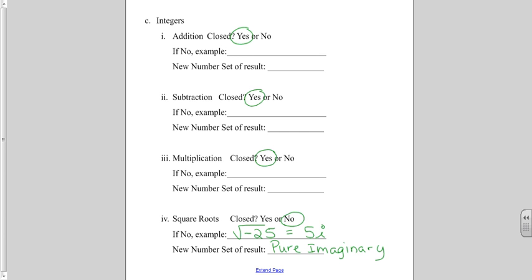But when I get down to square roots, the square roots are not closed for integers. Because if I take the square root of a negative integer, like the square root of negative 25, my answer will have an i in it. It will turn into a pure imaginary number.